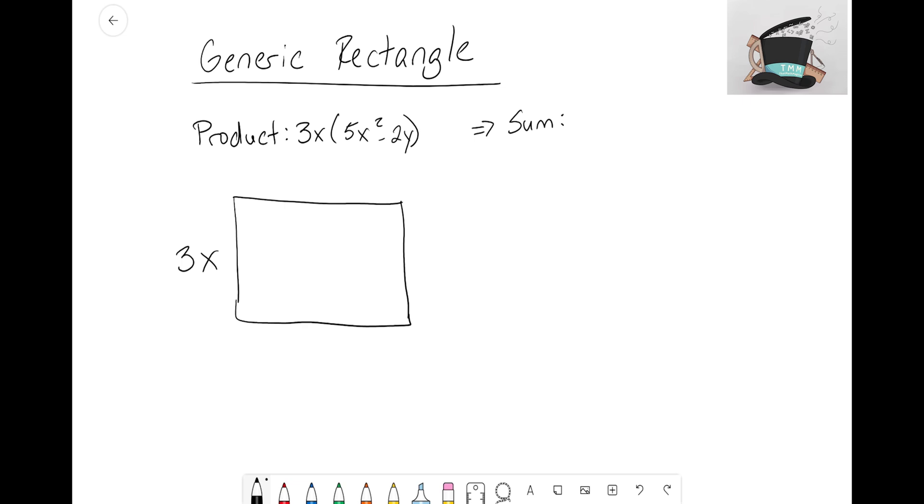For my rectangle that's on the bottom. There we go—we have our two sides listed out on our generic rectangle. Our next step is to fill in the inside.